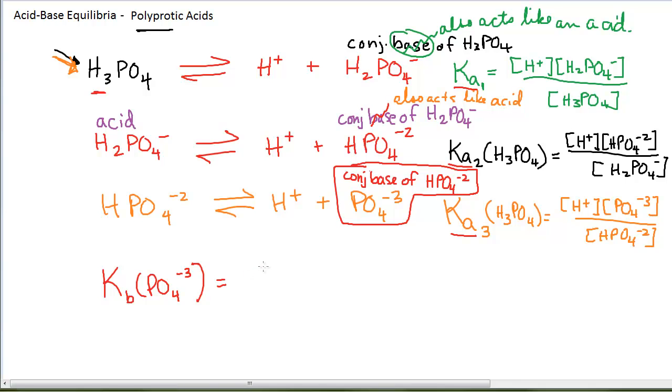The Ka times the Kb of a conjugate acid base pair is equal to 1 times 10 to the minus 14. So Kb for the phosphate ion times the Ka for its conjugate, it is the conjugate of HPO4-2, will equal 1 times 10 to the minus 14.